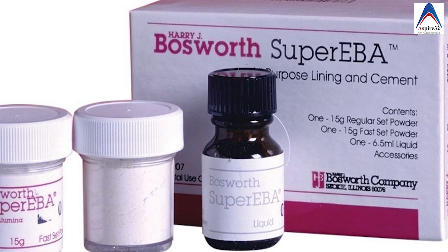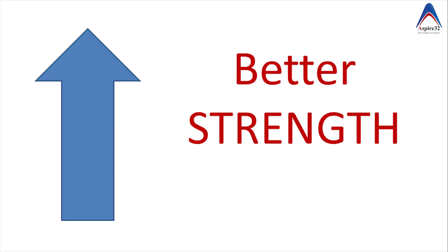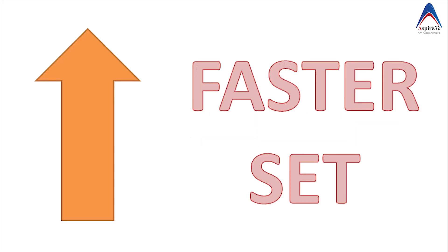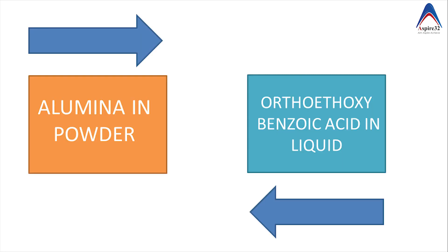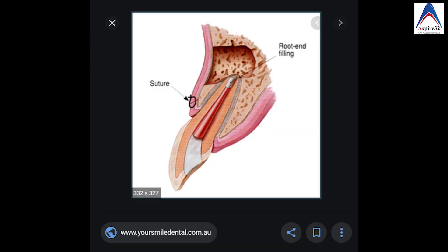The second modification is Super EBA, introduced to increase strength and also alter the setting time. It was modified by partially substituting eugenol with ortho-ethoxybenzoic acid, and the powder also had quartz or aluminium oxide added. Super EBA is considered one of the best materials for retrograde root filling.